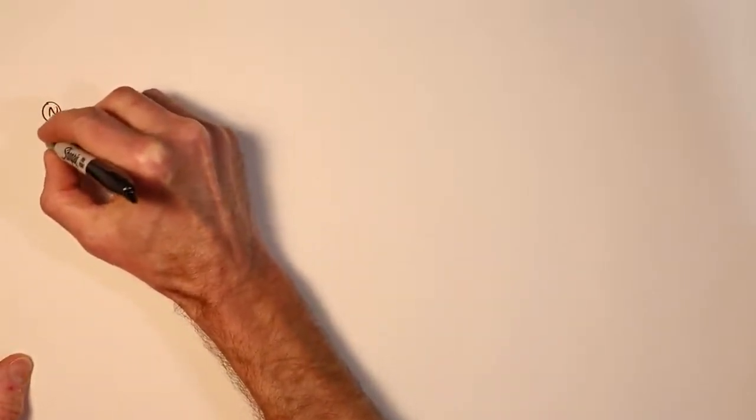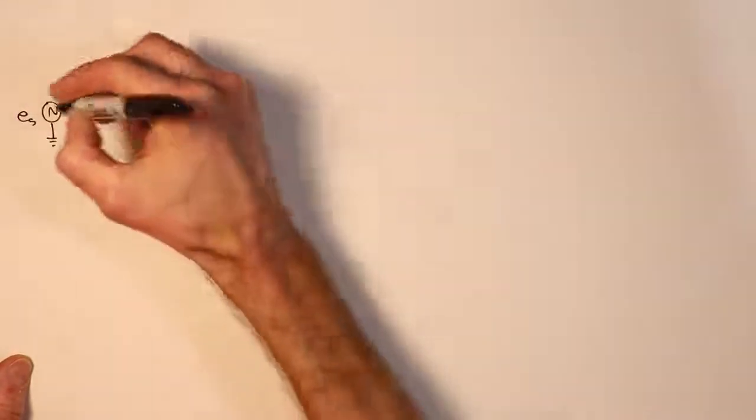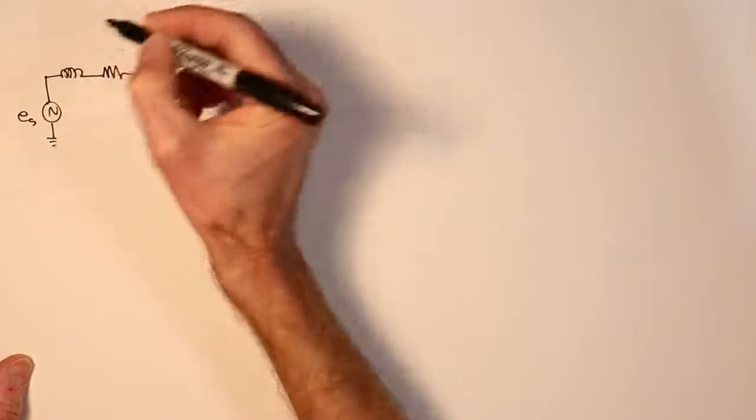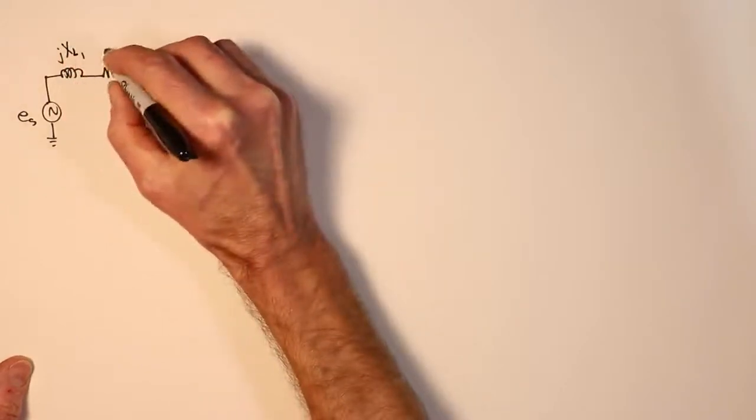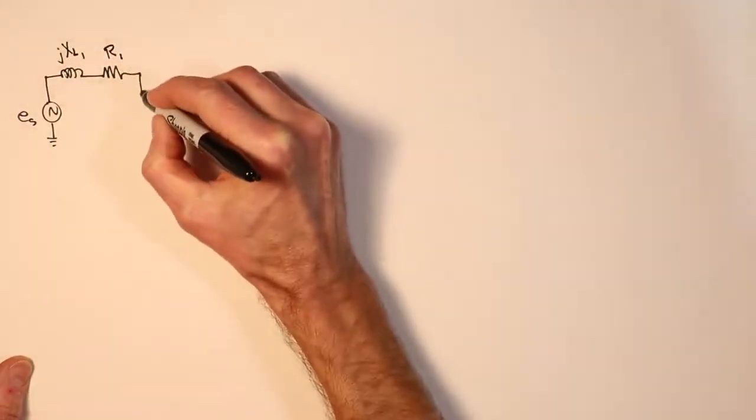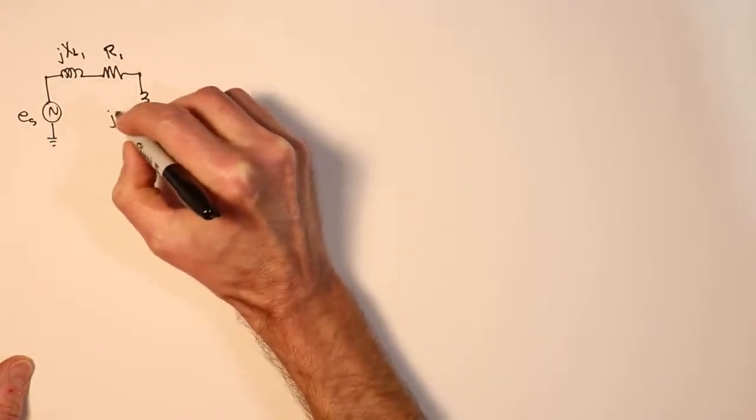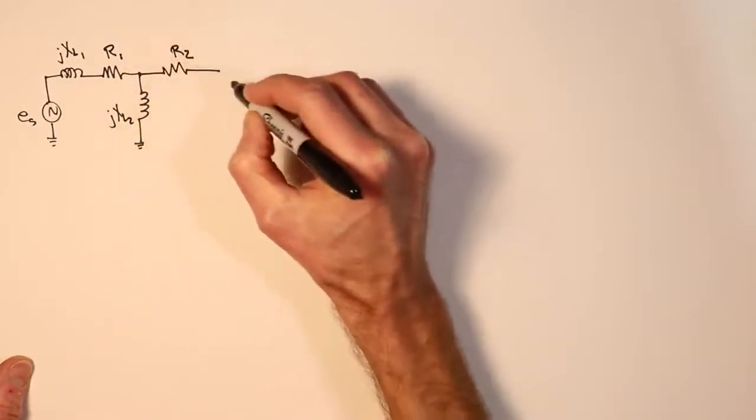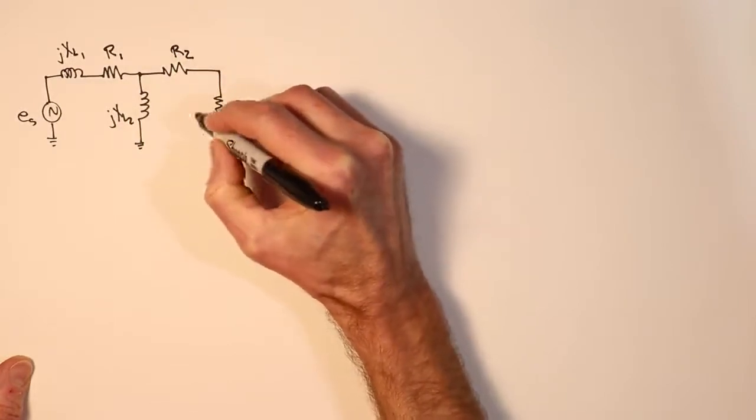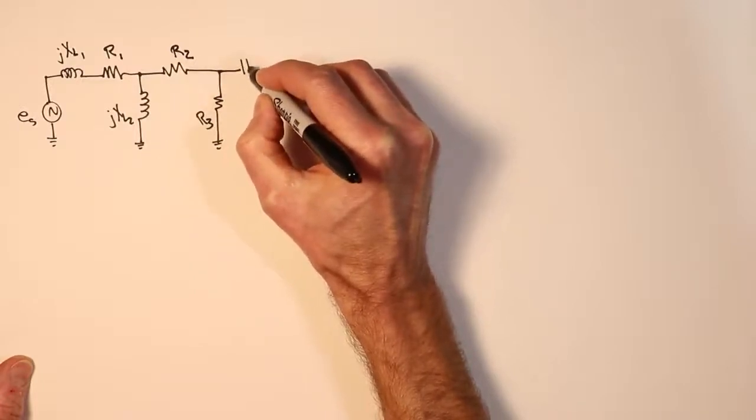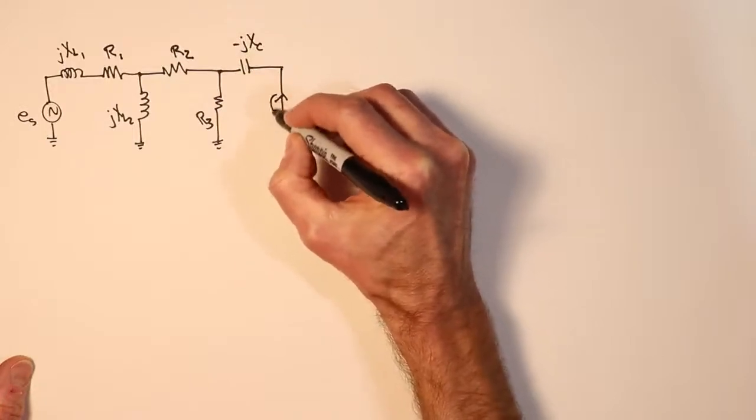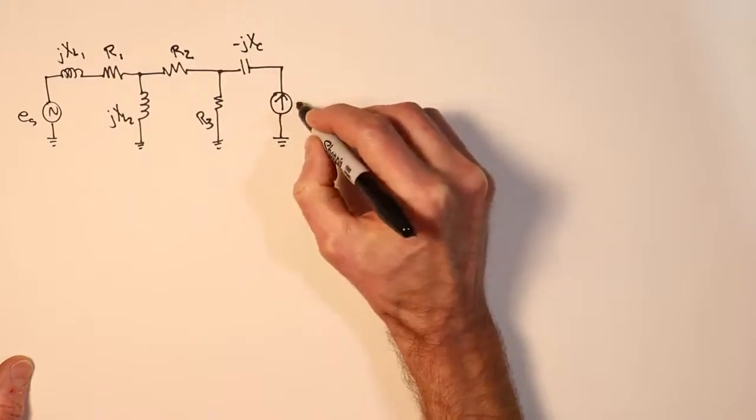So let's just dive right in here. We'll start with a little voltage source over here. We'll call this ES for source. It's associated with an impedance, complex impedance of an inductor, we'll call this JXL1, and a resistor R1. This will then come down through a second inductor, we'll call that JXL2, another resistor R2, a third resistor R3. And finally we have a capacitor over here, minus JXC, which feeds into a current source, an AC current source. We'll just call that I sub S.